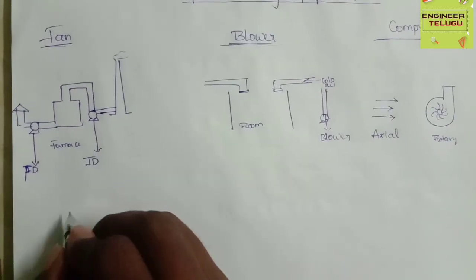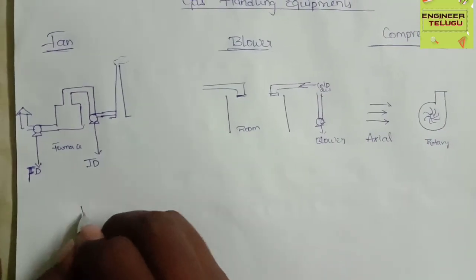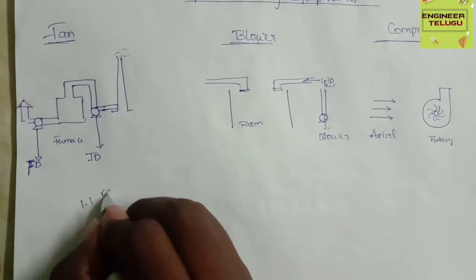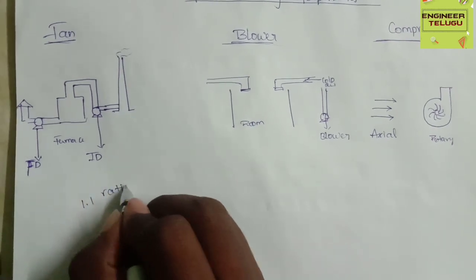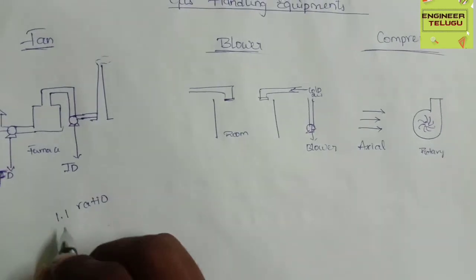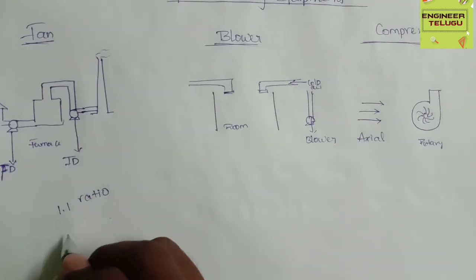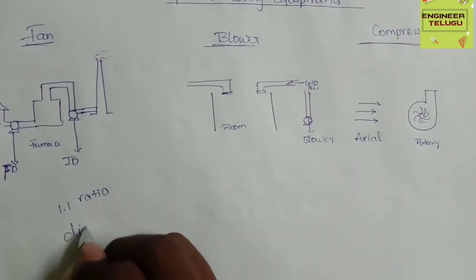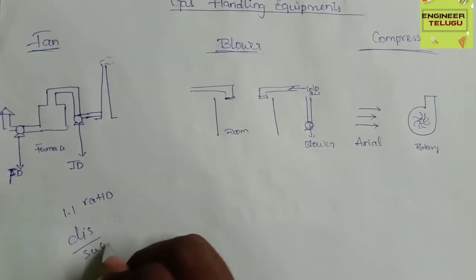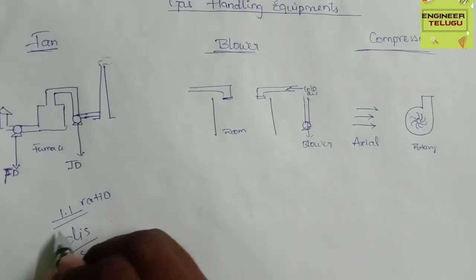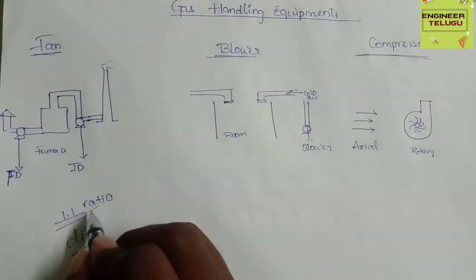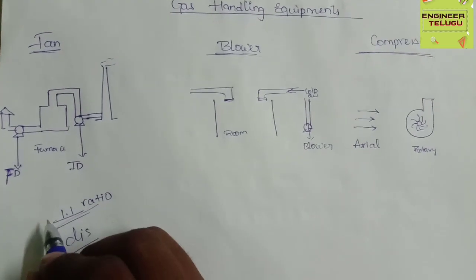The fan has a 1.1 ratio. The fan is discharged by the suction — 1.1 times it will boost the flow.